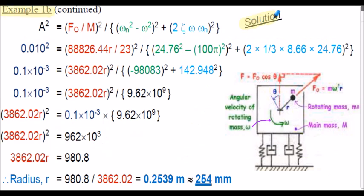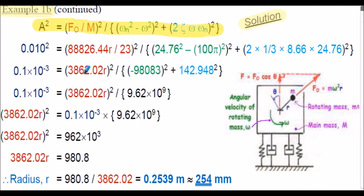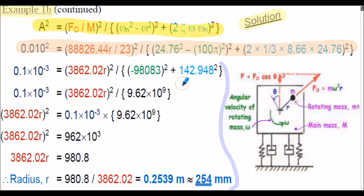Example 1b solution continued. Using the equation for A squared we derived previously, this is equation 11b shown on the summary slide, I basically now insert the values from our previous calculations and evaluate the solution. I'll let you review the solution at your own pace. I've tried to labour the steps of the calculation for your ease of understanding. What you should find is that the offset radius r is approximately equal to 254 millimetres. I'd encourage you to stop the presentation and review example 1b to make sure you're clear on the solution process.